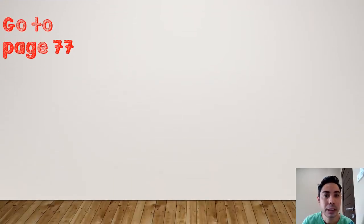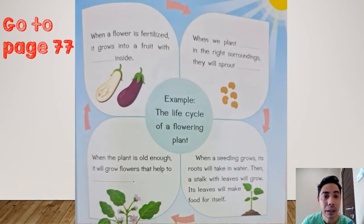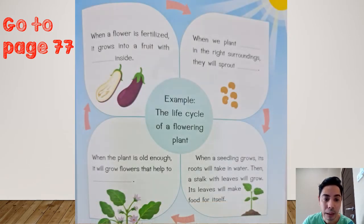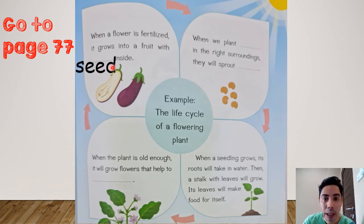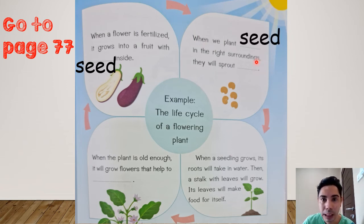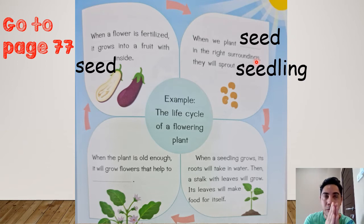Please open your book on this page. Now let us answer: when a flower is fertilized, it grows into a fruit — what does it have inside? It will grow a seed. And when we plant the seed in the right surroundings, it will sprout — what will grow? Yes, it will grow a seedling, and then become a sapling. The seed will grow, it will have a baby leaf, and the baby leaf will grow bigger into a new young plant.